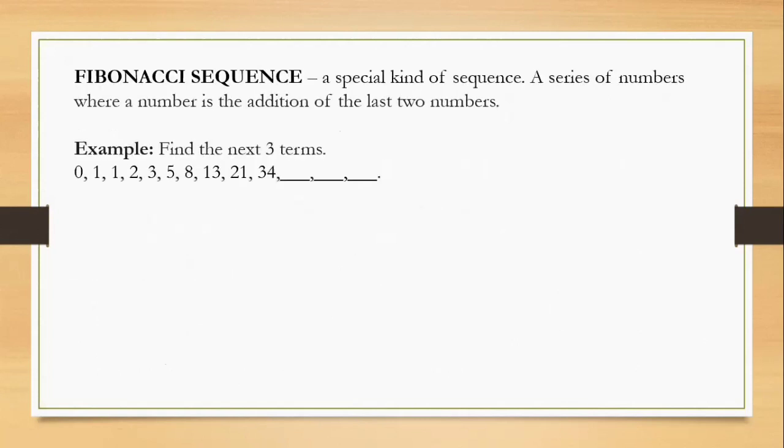So for now, let's move to the Fibonacci sequence. It is a special kind of sequence or it is a series of numbers where a number is the addition of the last 2 numbers. Meaning, to get the next term, we will just add the previous 2 numbers.